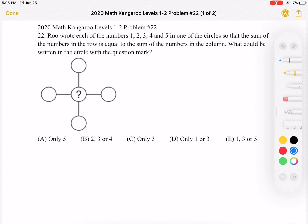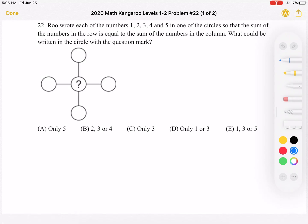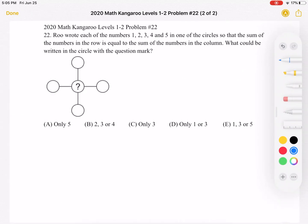A, only 5. B, 2, 3, or 4. C, only 3. D, only 1 or 3. Or E, 1, 3, or 5. This is the problem as it originally appeared on the test, and here is where we'll be doing the solution.